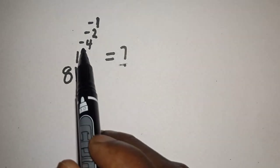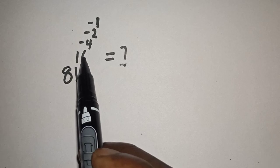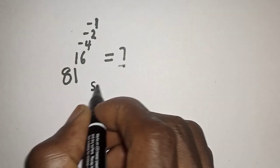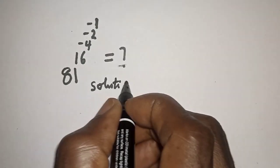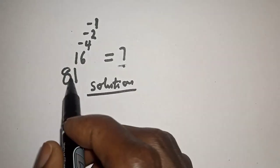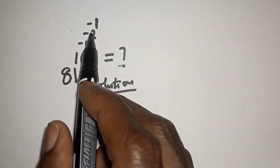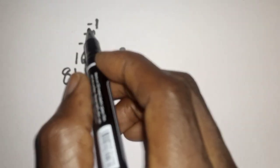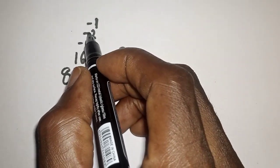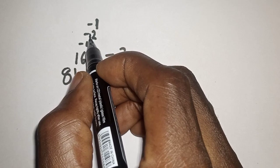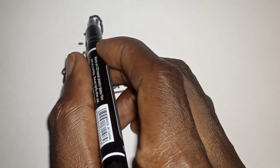Before we proceed, please don't forget to like, share, comment and subscribe. Thank you. Solution: we have 81 raised to power 16 raised to power minus 4 raised to power minus 2 raised to power minus 1. We work with the innermost exponent first, then 2 raised to power minus 1.